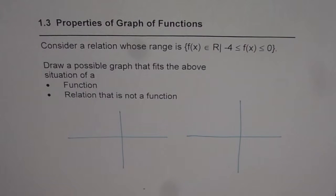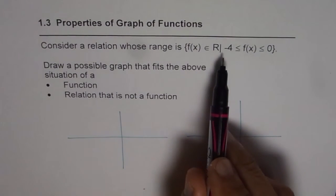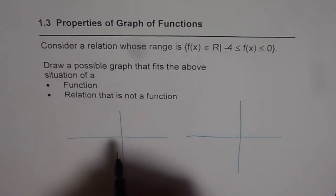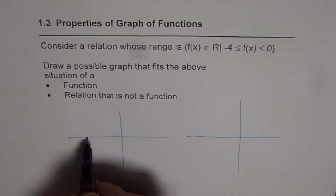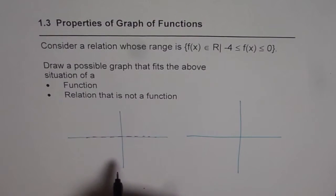And what we need to do is find a relation where the range is restricted between -4 and 0. That is to say 0 is the upper limit. So that is the upper limit of our range. It is equal to also, it's including, and let us say this is -4.